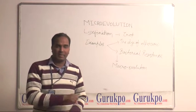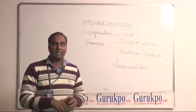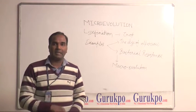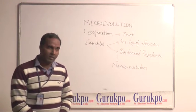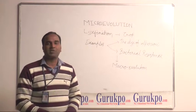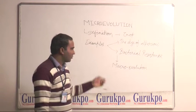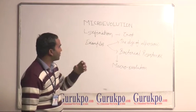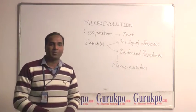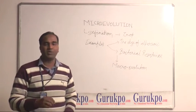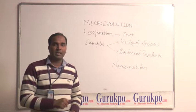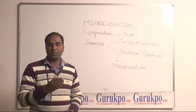One gene can be converted into a broad form at a very broad level in the evolution process, from one generation to the next generation. The definition of microevolution: microevolution means how one gene can be converted into a broad gene.